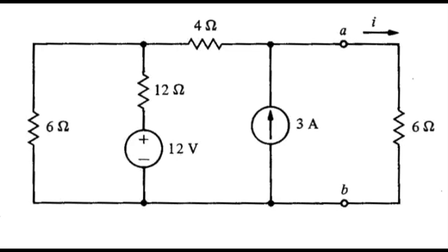In this problem, we want to find the current I, and we want to do that by finding the Thevenin equivalent of everything to the left of these terminals. Once we've done that, then we can use that simple circuit to go ahead and find the current I.